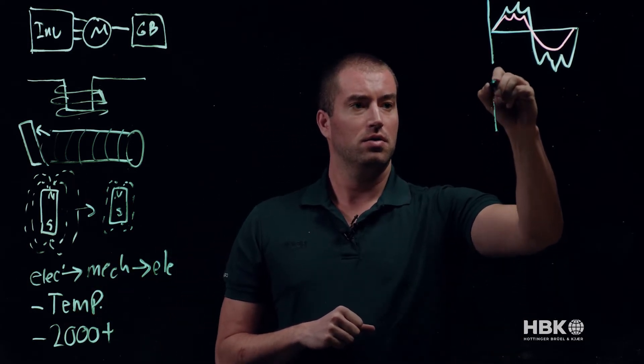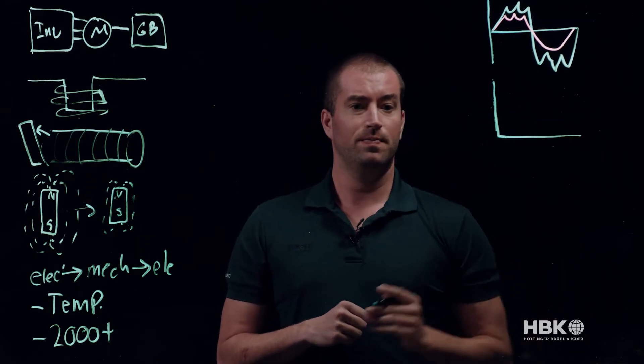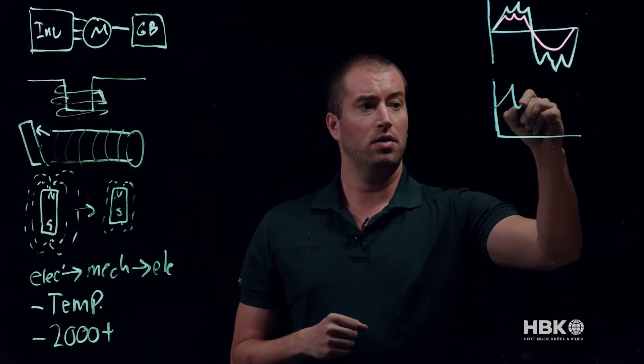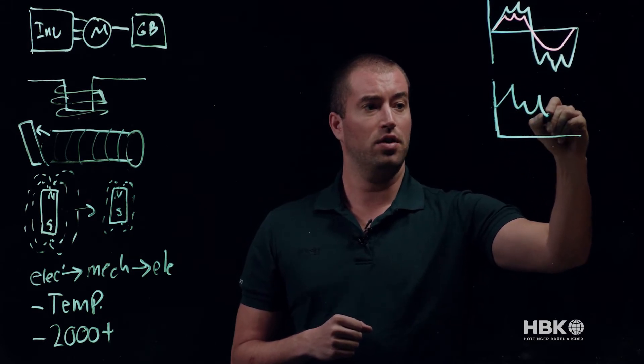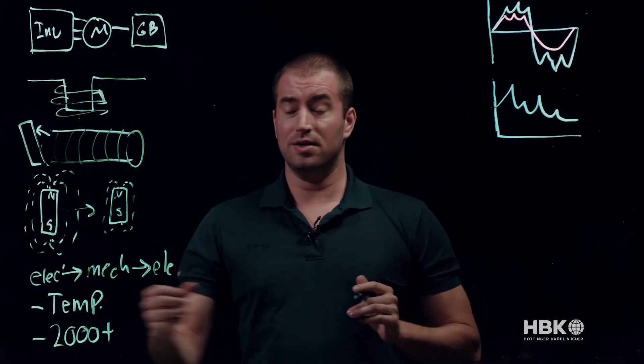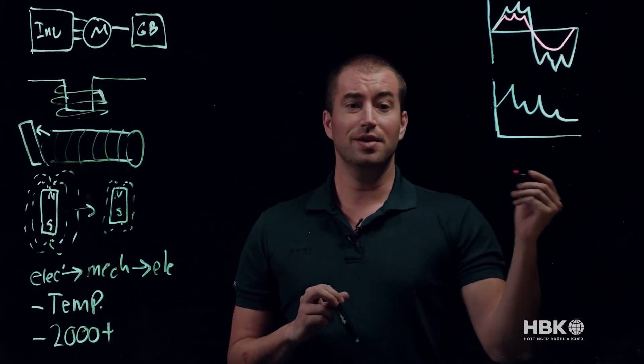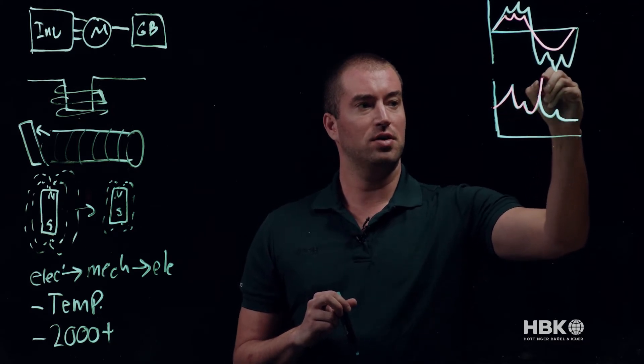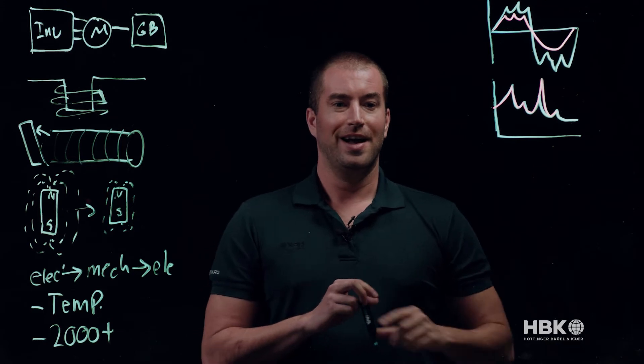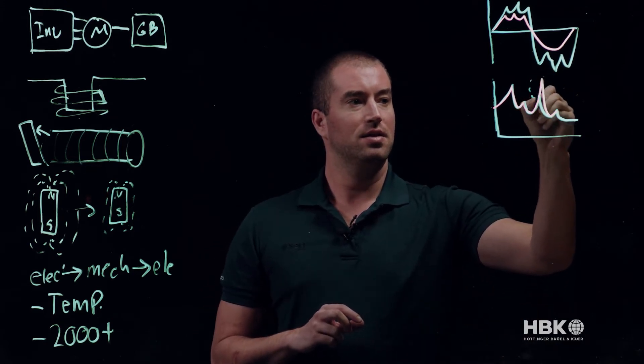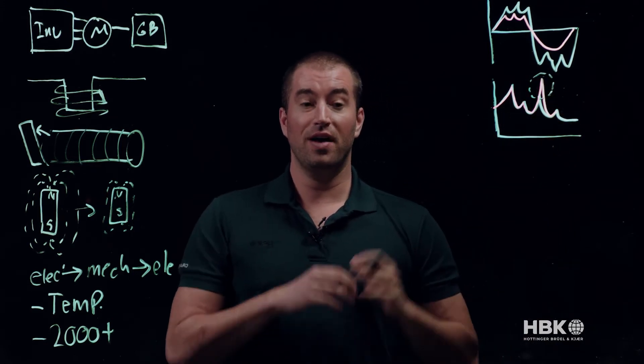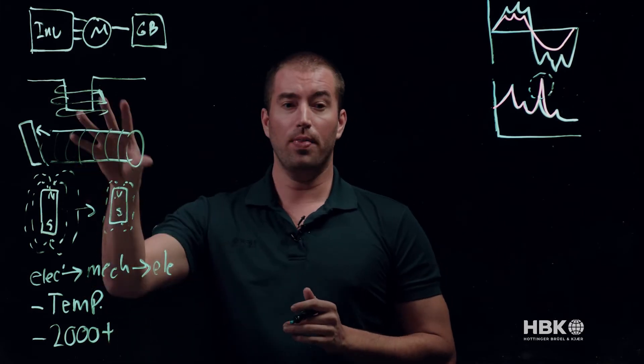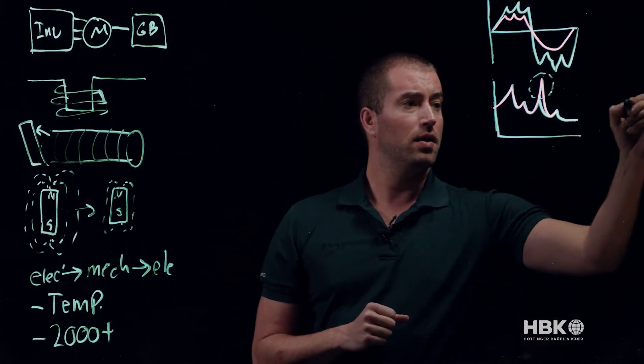We can also look at the harmonic output of the machine. We can look and see here's my fundamental, here's my third, here's my fifth. And over time, over that 2,000 hours, we can see if there's long-term changes. Maybe my fundamental stays the same, but my fifth starts to drastically increase. This can help us identify if something's going to fail and again try to accelerate that testing or identify what the mode of failure is.